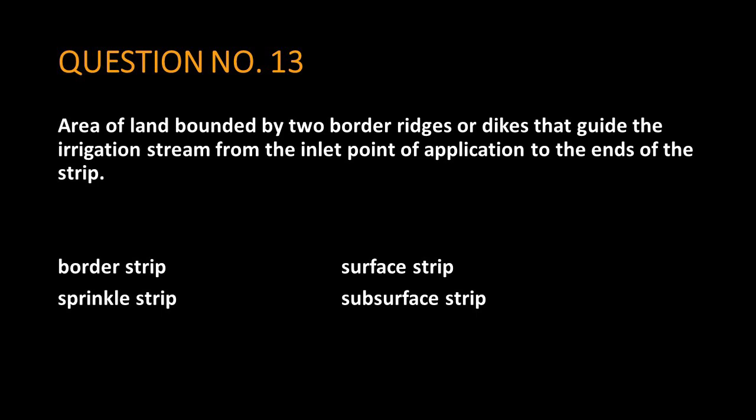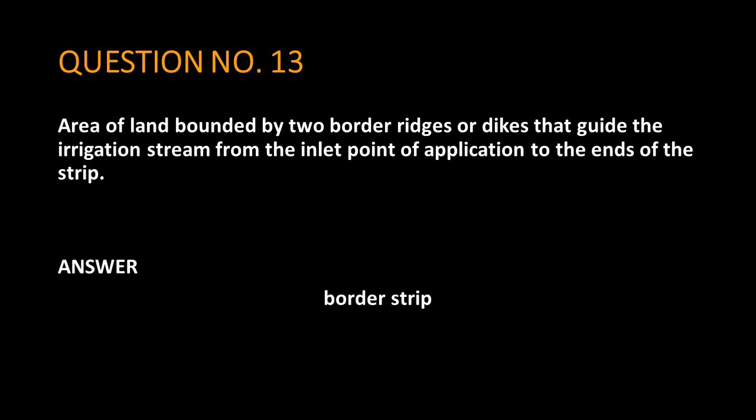Question number 13. Area of land bounded by two border ridges or dikes that guide the irrigation stream from the inlet point of application to the ends of the strip. The answer is: border strip.